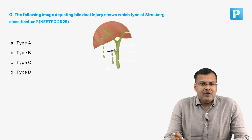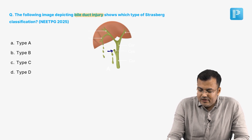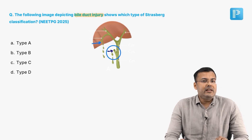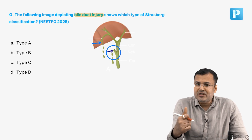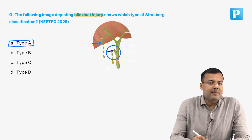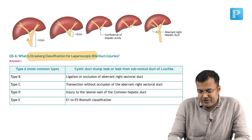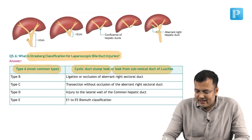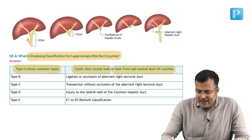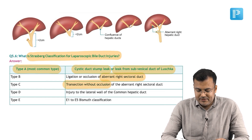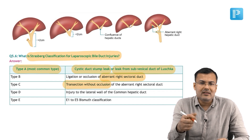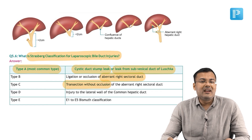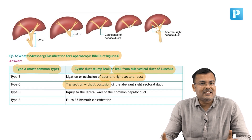This question is taken from NEET PG 2025. The image depicts a bile duct injury — which type of Strasberg classification? The arrow shows a leak from the cystic duct stump and a leak from the subvesicular duct of Luschka. Whenever there is a leak from the subvesicular duct of Luschka or cystic duct stump, it is type A — the most common. Type B: ligation or occlusion of aberrant right sectoral duct. Type C: transection without occlusion. Type D: injury to the lateral wall of the common hepatic duct. Type E: E1 to E5 — Bismuth classification. The most common type is type A.